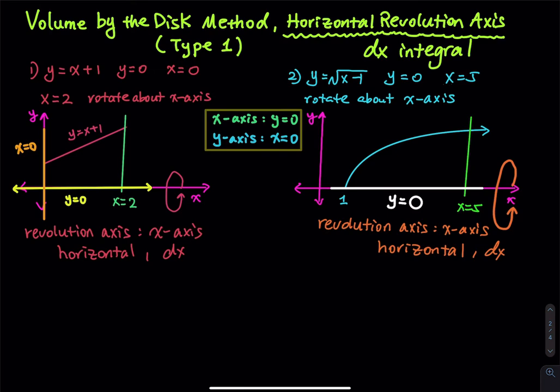Y equals 0 and x equals 0 appear all the time in volume problems. Keep these in mind: the x-axis is y equals 0, and the y-axis is x equals 0. X equals 2 is a vertical line. Looking at the graph, there is an area bounded by these curves, and we rotate it about the x-axis — indicated by the pink or red arrow with a rotation symbol.